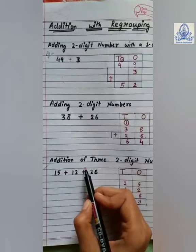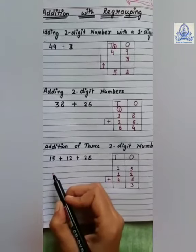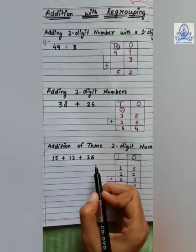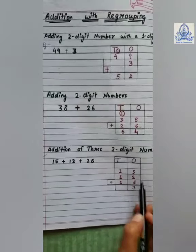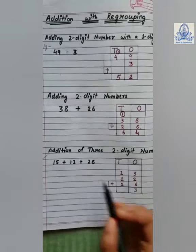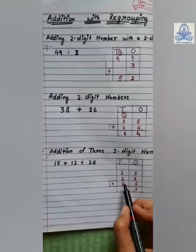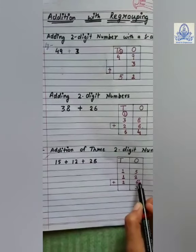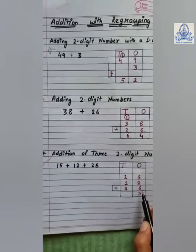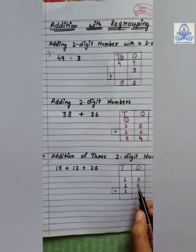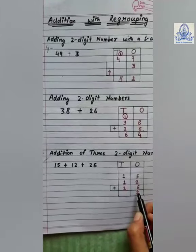Now, addition of three two-digit numbers. Here, the example given is fifteen plus twelve plus twenty-six. We will arrange these numbers in columns. Fifteen: one at tens place, five at ones place. Twelve: one at tens place, two at ones place. Twenty-six: two at tens place, six at ones place. First, we will add the ones digit. Five plus two plus six is thirteen.